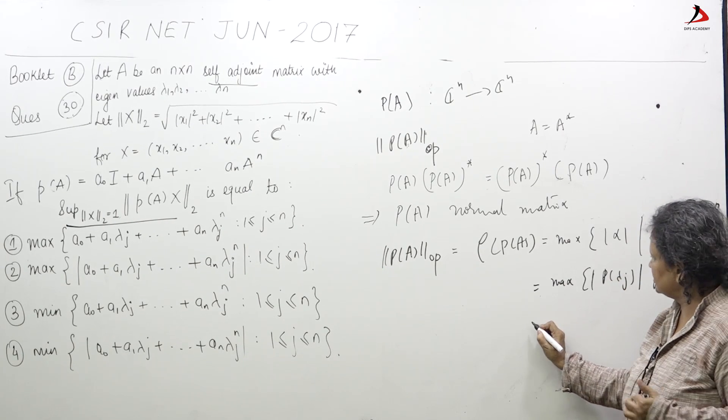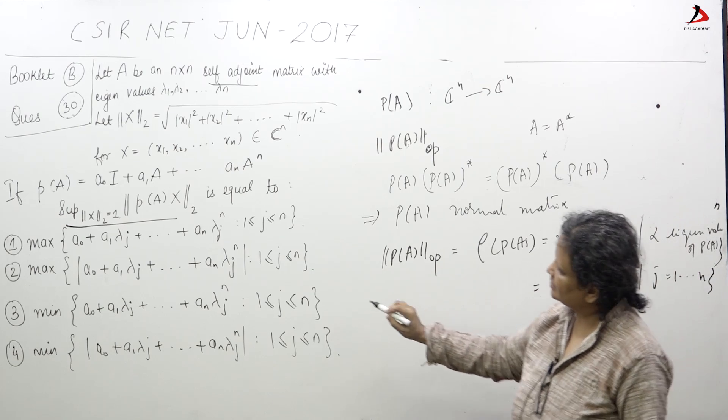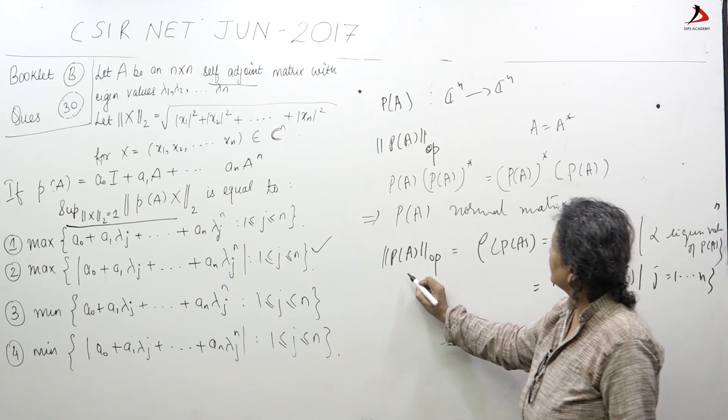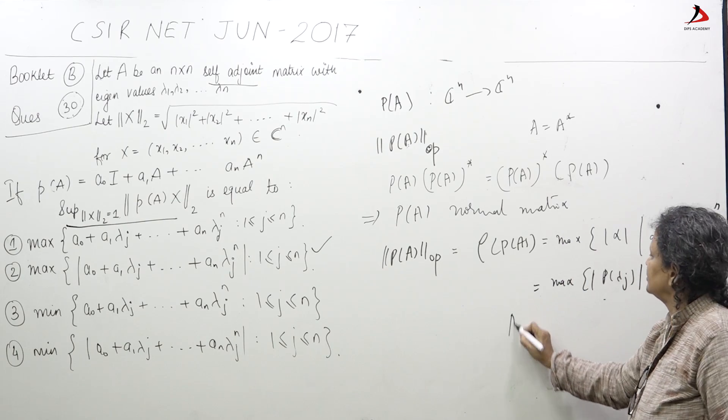So that is why this is the answer. So rho of A operator norm is equal to this. Answer is 2.